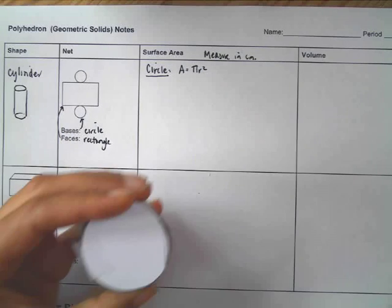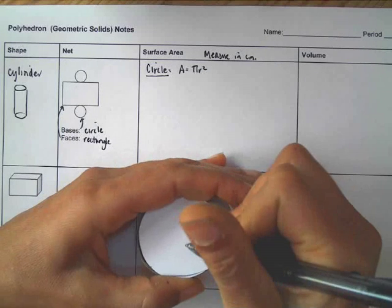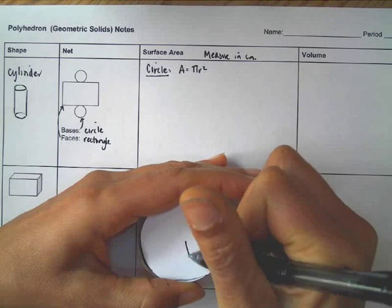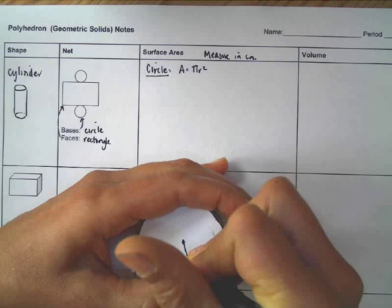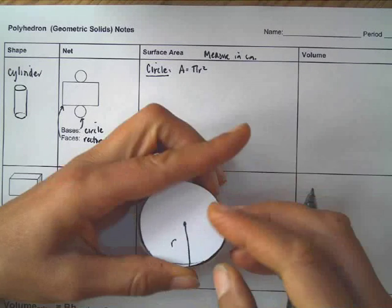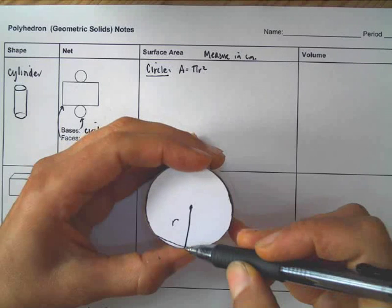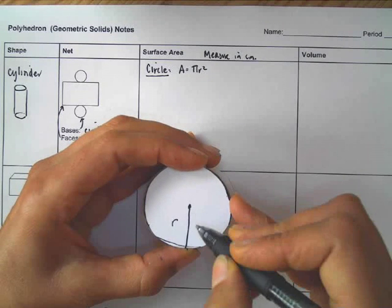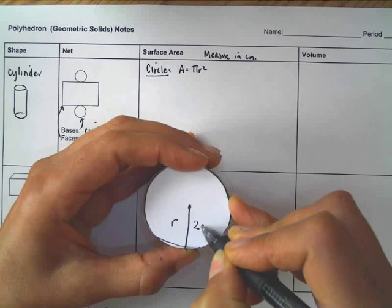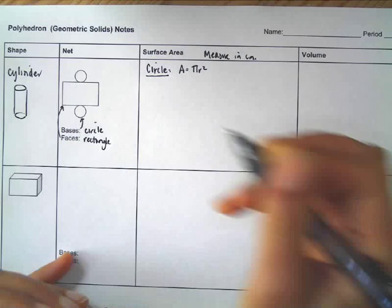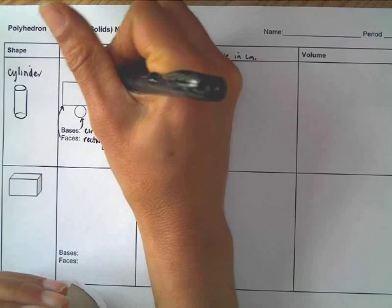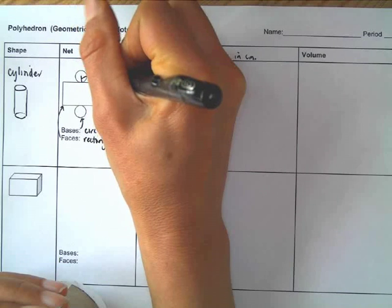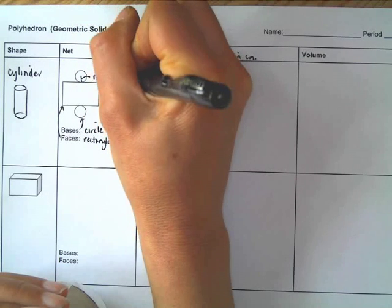I'm going to take my ruler and I'm going to measure it. I pre-measured this one already. This here from, and once again we're going to be measuring the radius. The radius is from the outer edge to the center of the circle. And this is 2 centimeters. You're going to want to put your measurements on your actual drawing. So I'm going to say radius equals 2 centimeters.